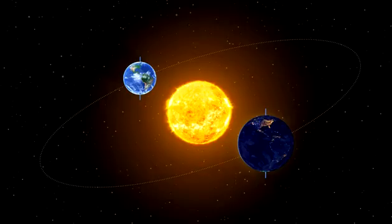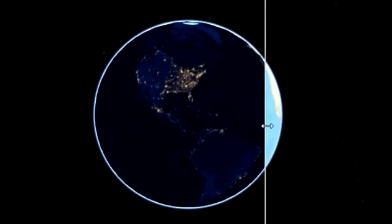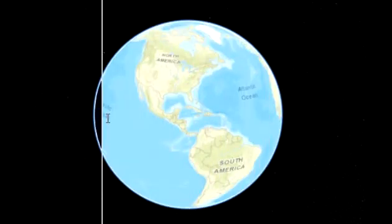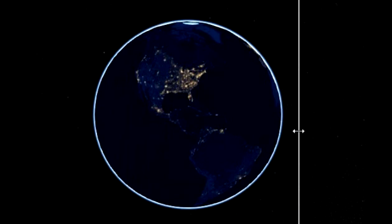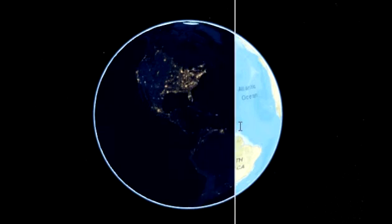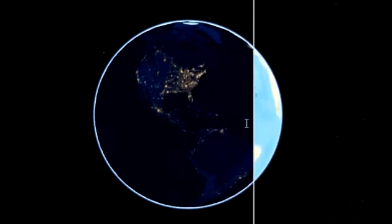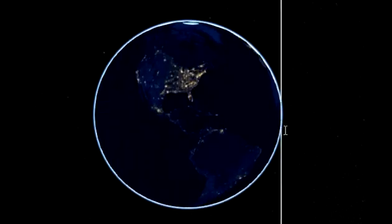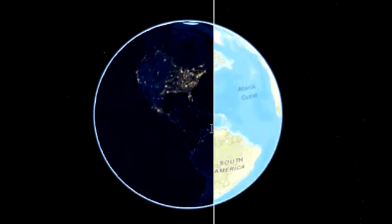North of the equator, fall begins in September. In the southern hemisphere, it starts in March. The first day of autumn is in 2023 on September 23 for Eastern Standard Time. It is also called the autumnal equinox, fall equinox or the beginning of autumn. Autumn is one of the four temperate seasons, the transition period between summer and winter usually in September northern hemisphere, when the arrival of night becomes noticeably earlier.